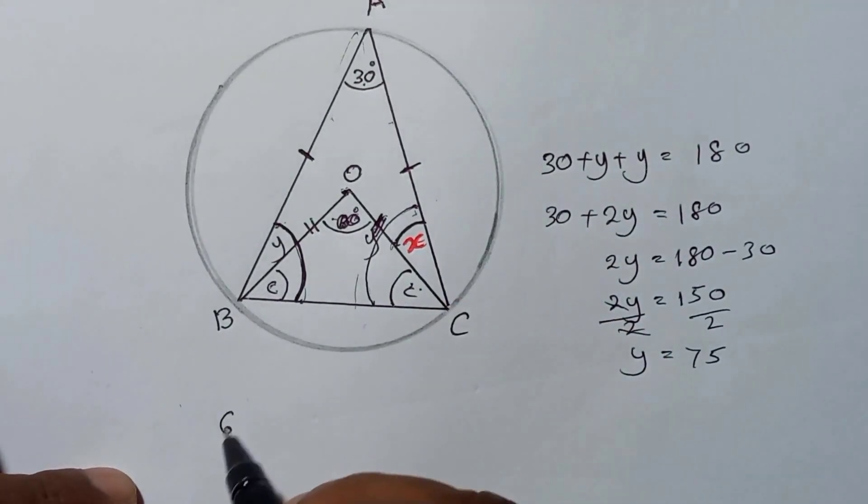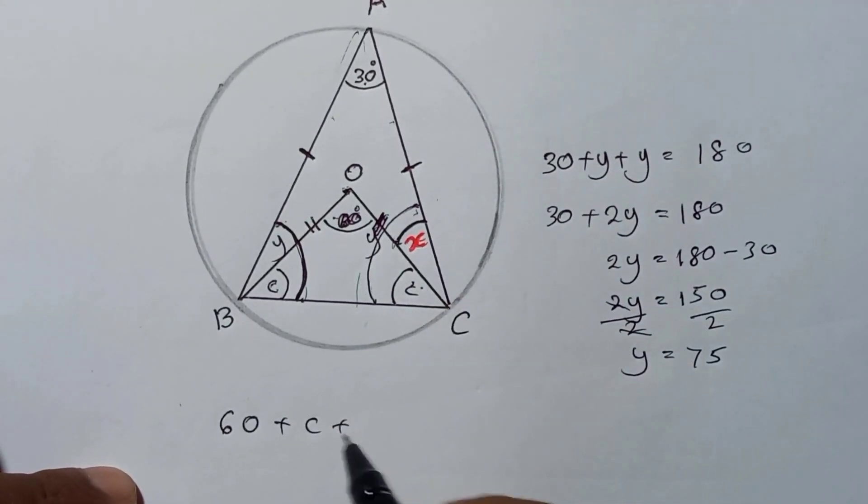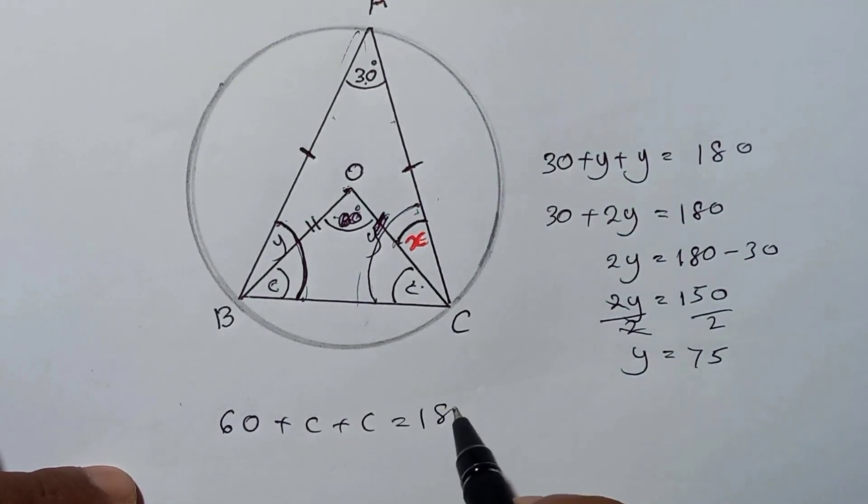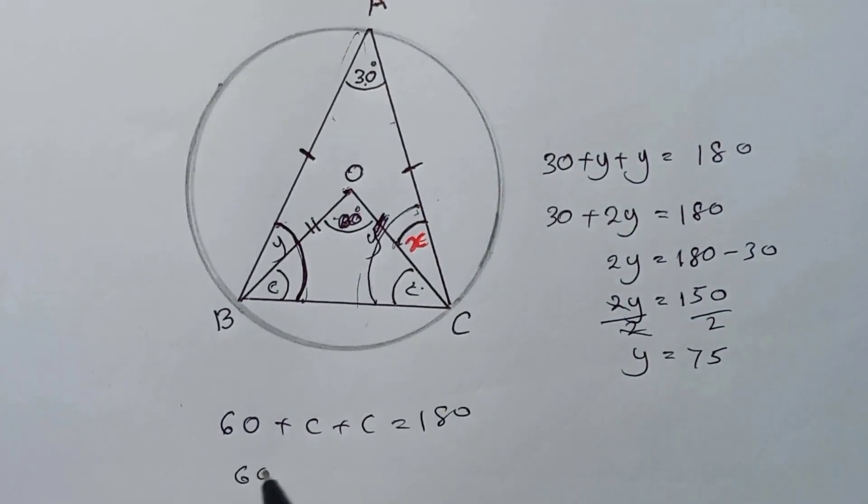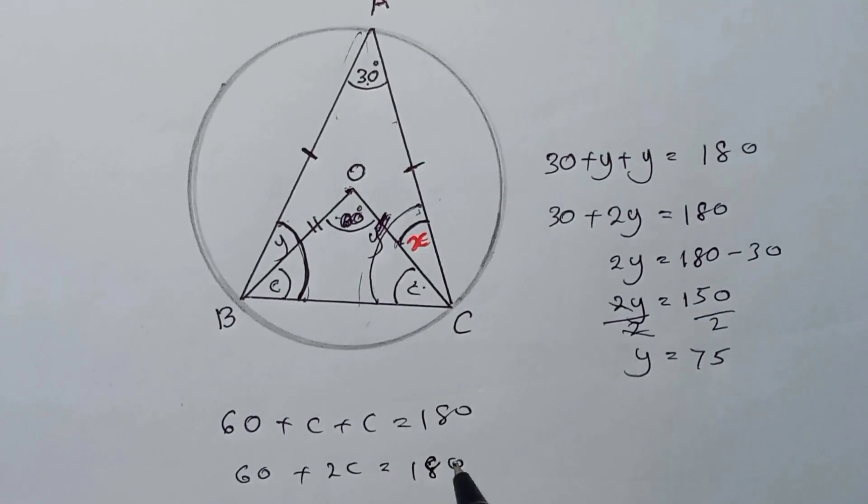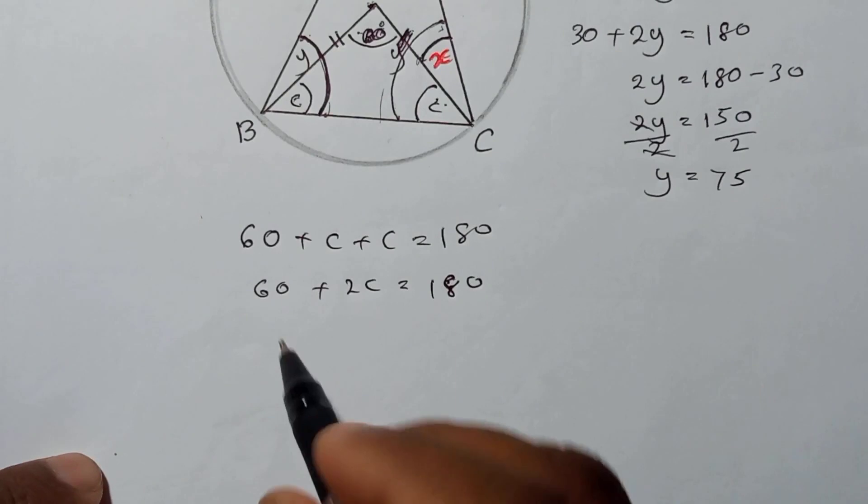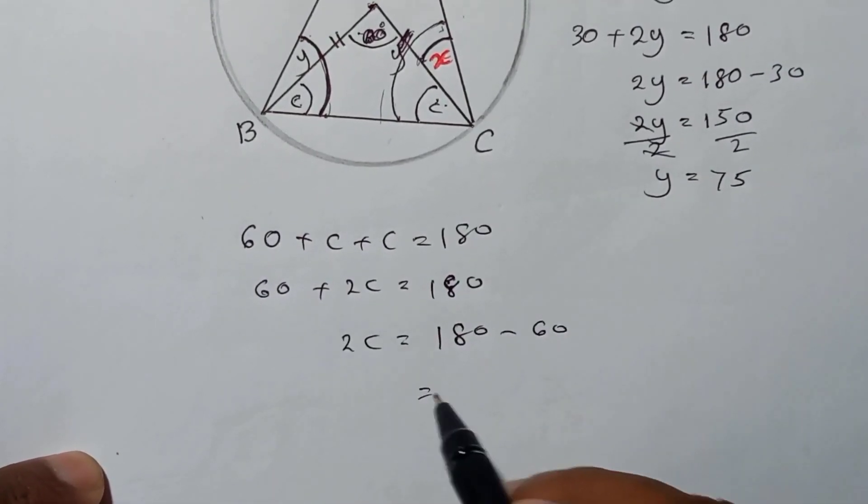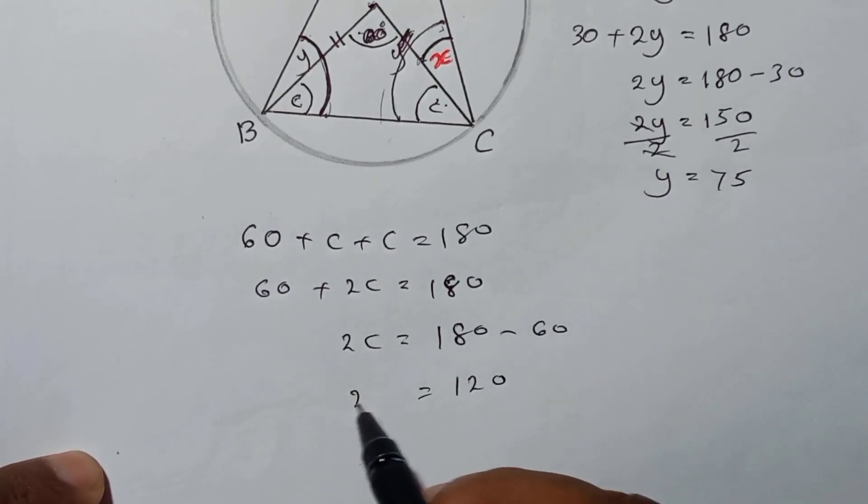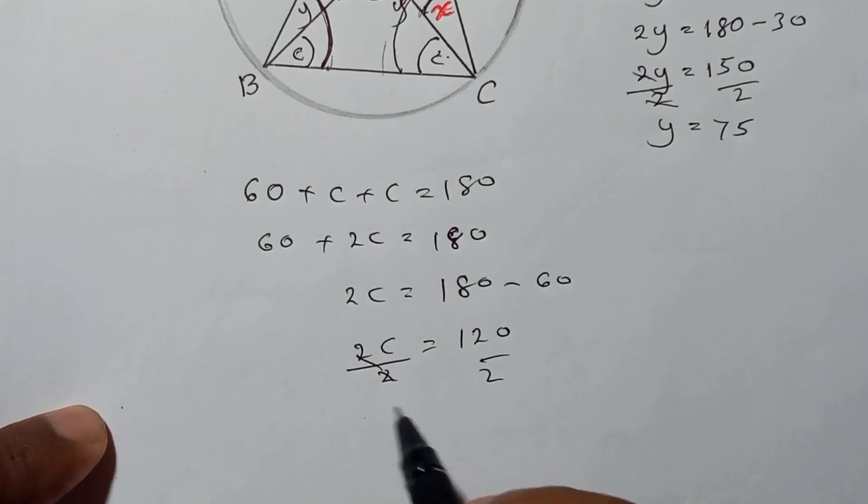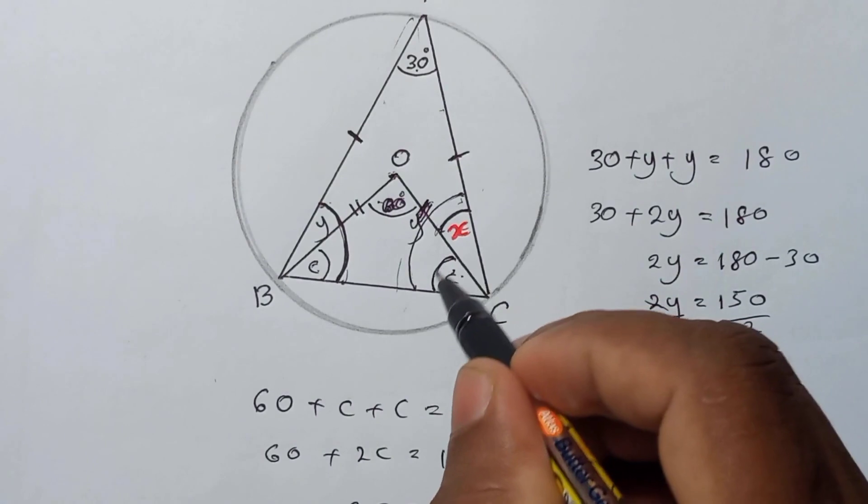Now you can tell again the same way we can do the same work here. 60 plus c plus c equals 180. Now here 60, here will be 2c equals 180. Now 2c, keep here, 180 minus 60, the answer here is 120. You don't need to do this working, you can understand.